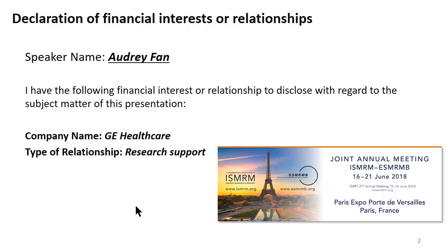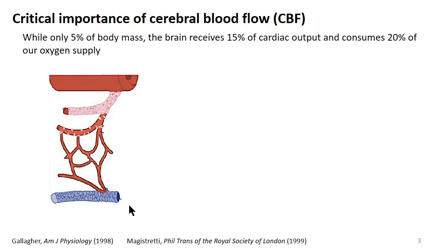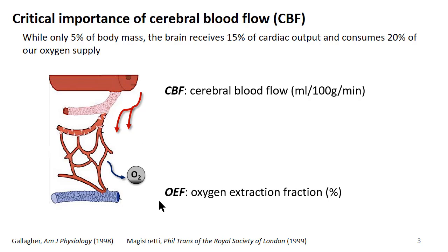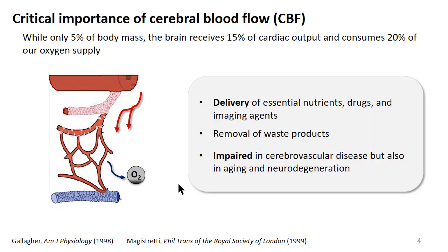We receive research support from GE Healthcare. Throughout this course, hopefully we've conveyed as instructors how important it is to quantify cerebral blood flow as delivery of essential nutrients such as oxygen, which is extracted by tissue, but also whether pharmacological agents and imaging agents are able to reach the brain. This is important not only in cerebrovascular disease such as stroke, but in many neurological disorders, including normal aging and neurodegeneration.